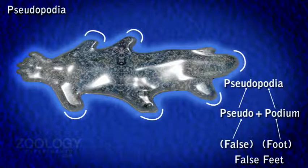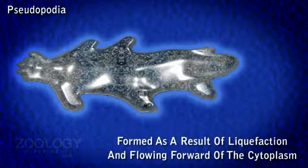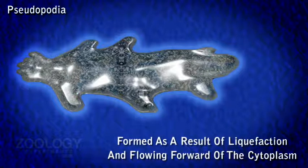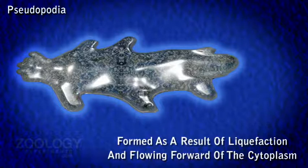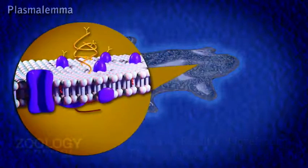Pseudopodia are formed as a result of liquefaction and flowing forward of the cytoplasm, often with considerable speed. As many pseudopodia are formed simultaneously, Amoeba Proteus is called a polypodial species. If pseudopodia are large and broad with rounded tips, such pseudopodia are called lobopodia.